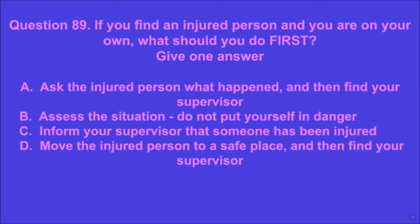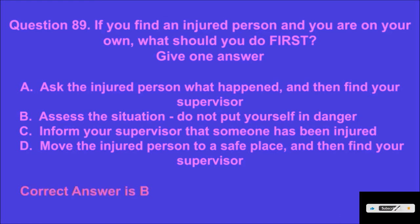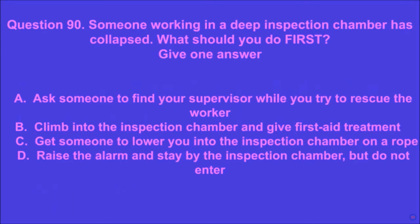Question 89: If you find an injured person and you are on your own, what should you do first? Give one answer. A: ask the injured person what happened and then find your supervisor, B: assess the situation and do not put yourself in danger, C: inform your supervisor that someone has been injured, D: move the injured person to a safe place and then find your supervisor. B is the correct answer.